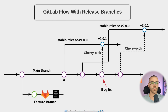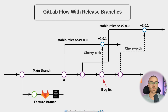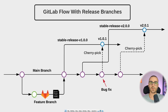You should only use the release branches version of the GitLab flow if you're releasing software to the outside world or to the public — like an open source project or downloadable software like the Chrome browser. The environment branches version best suits internal teams within an organization that are not releasing software to the public, but instead are promoting their application to different environments within their organization, or publishing a closed-source web application accessible to the public but not downloaded to a user's computer.